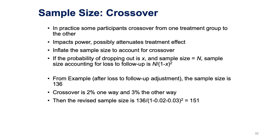Similarly, crossover may happen in the trial. It impacts power and dilutes the treatment effect, so we need to inflate the sample size to account for it. The sample size is adjusted by a squared term of 1 minus the crossover. In our example, after adjusting for loss to follow-up we have 136. Our crossover is 2% one way and 3% the other way. So our revised sample size takes 1 minus 0.02 minus 0.03, squares that, and divides 136 by it to get a total of 151. Our initial sample size was 128, but after adjusting for loss to follow-up and crossover, it is now 151.